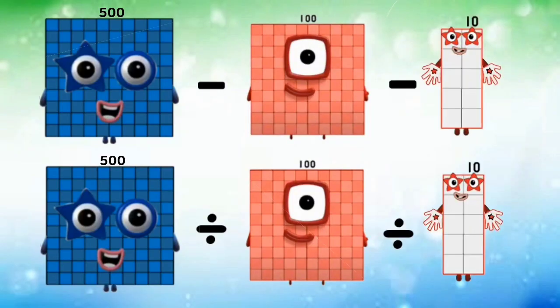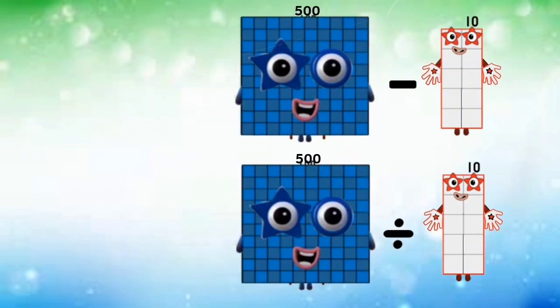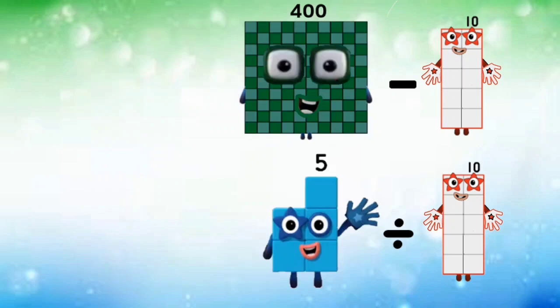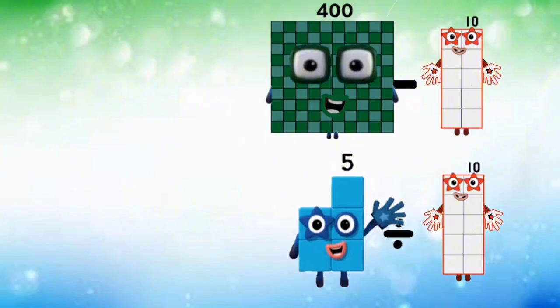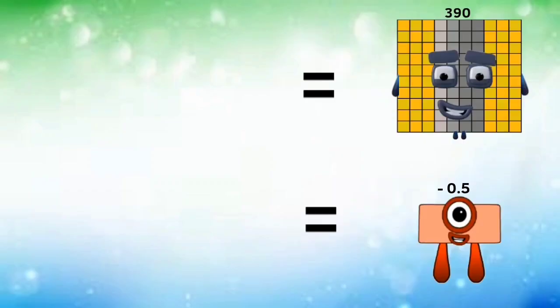500 subtracted and divided by 100 equals 105. 400 minus 10 and 5 divided by 10 equals 390 and negative 0.5.